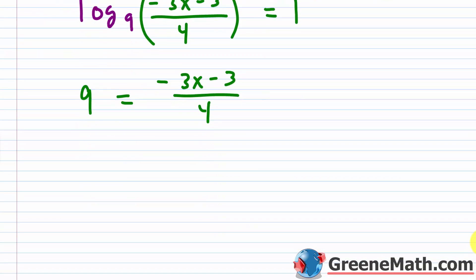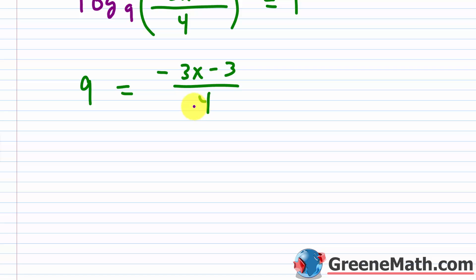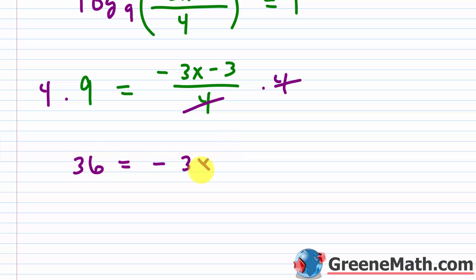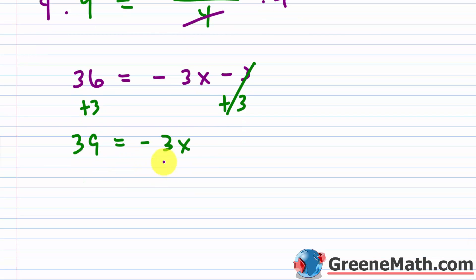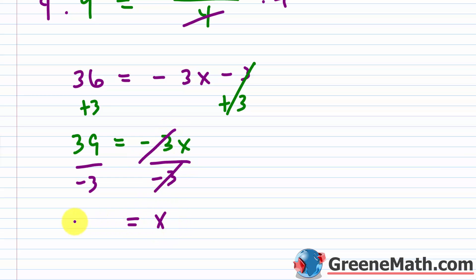We put this in exponential form: 9 to the first power, which is just 9, equals negative 3x minus 3 over 4. Multiplying both sides by 4 to clear the denominator gives 36 equals negative 3x minus 3. Adding 3 to both sides gives 39 equals negative 3x. Dividing both sides by negative 3, x equals negative 13. So that's going to be our solution. I've already checked this — it does work out as a solution.